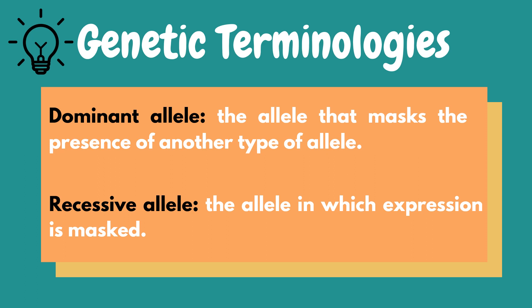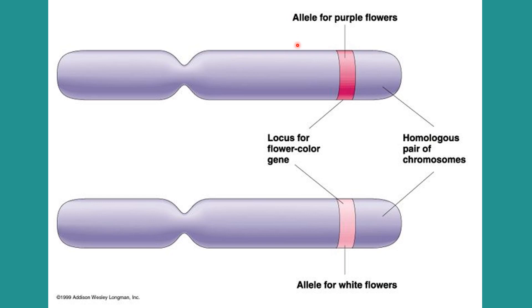A gene can exist in different forms across organisms. These different forms are known as alleles. The exact fixed position on the chromosome that contains a particular gene is known as a locus. Based on the picture, the locus or the position of the gene for flower color are in the exact same location on both chromatids, resulting in the formation of a homologous pair of chromosomes. A homologous pair of chromosomes can also be considered if both chromatids have the same length of arms, centromere location, and position of genes in the locus.